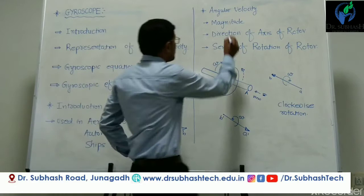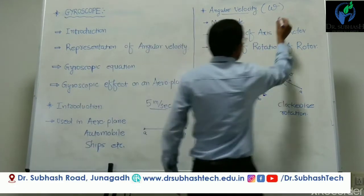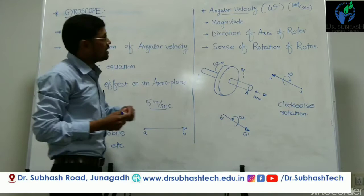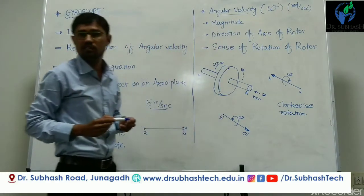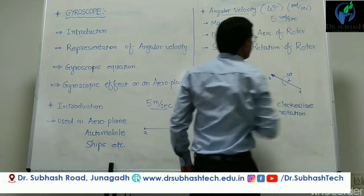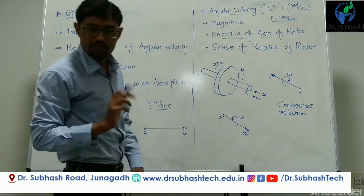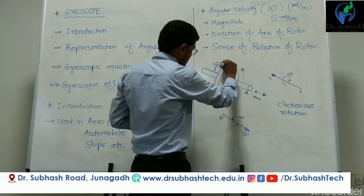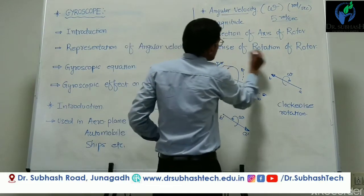In the same way we can represent angular velocity. Angular velocity is omega and its unit is radian per second. To represent angular velocity we require three terms. First is the magnitude of the angular velocity — suppose 5 radians per second. Second is the direction of the axis of rotor — here we consider one rotor rotating with omega angular speed in a clockwise direction. Third is the sense of rotation of the rotor — a rotating body can rotate either clockwise or anticlockwise.